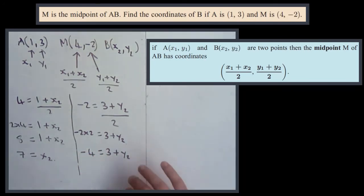Subtract the 3 from both sides. So -4-3 = y2. That must be -7 = y2.